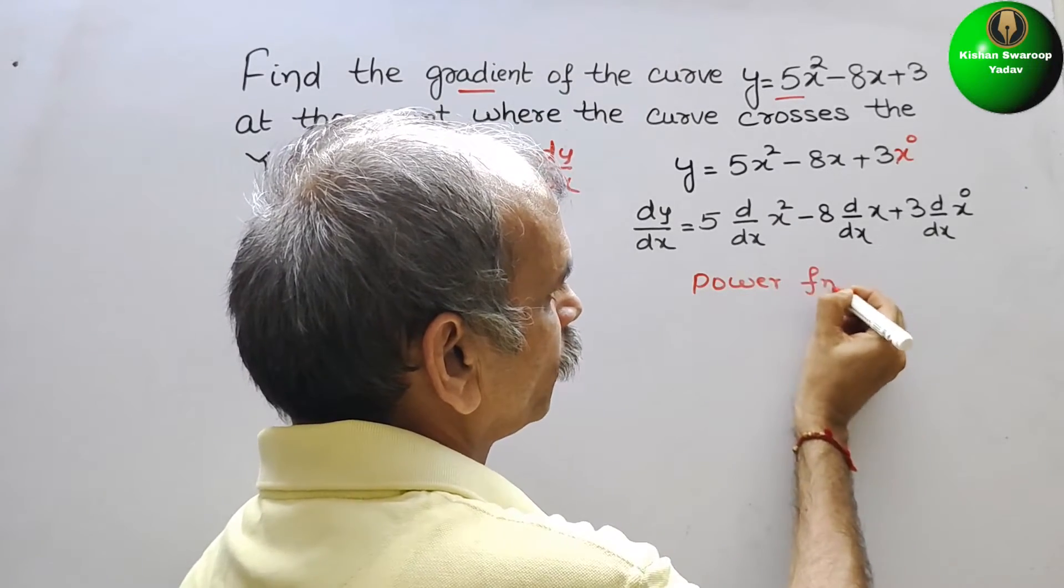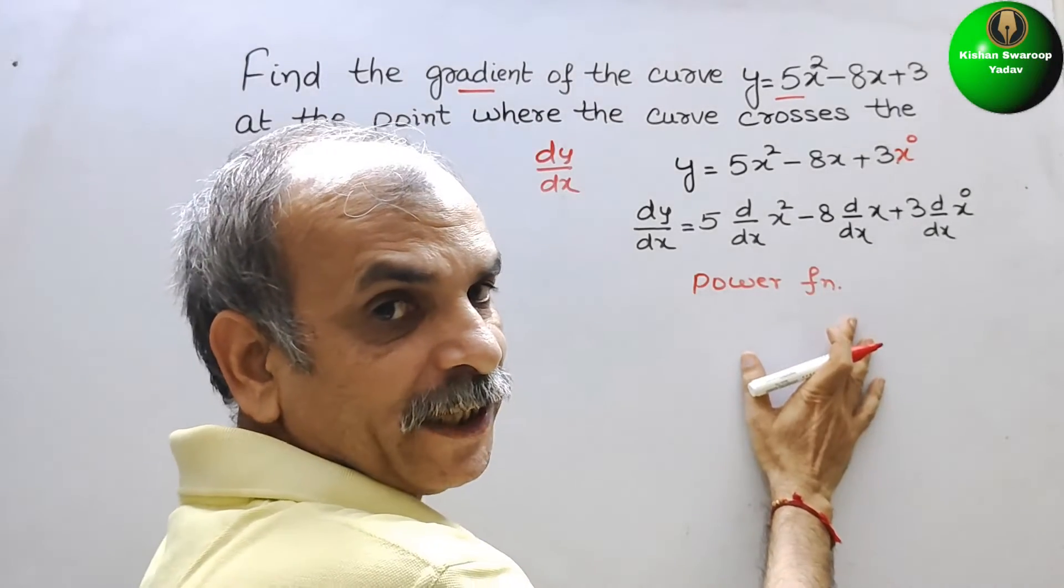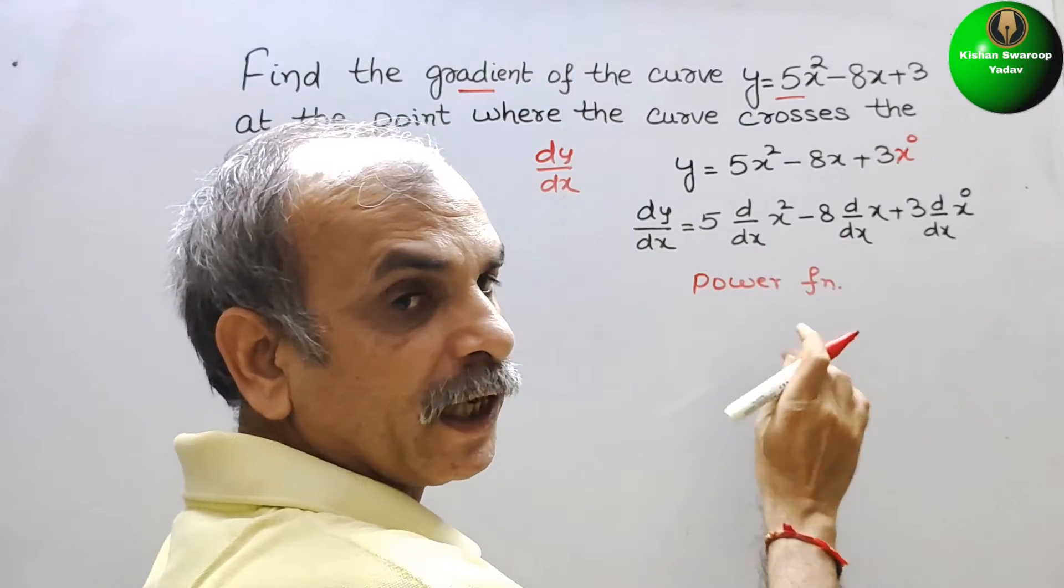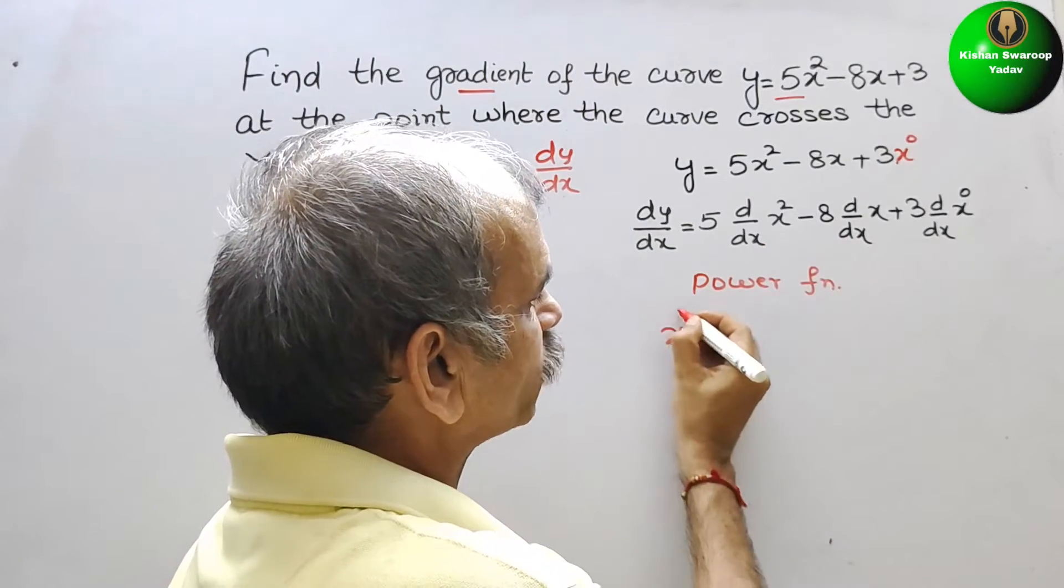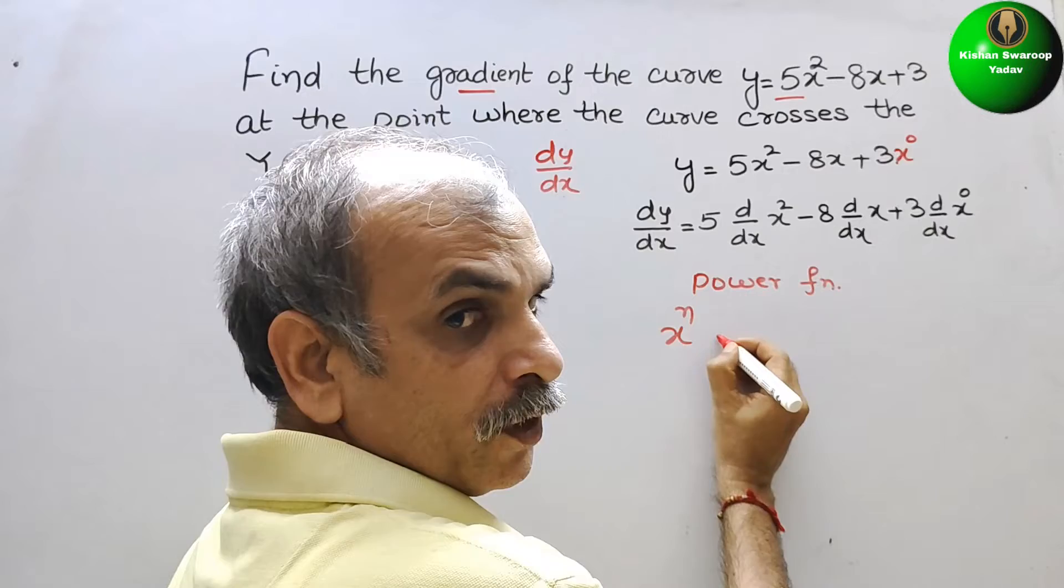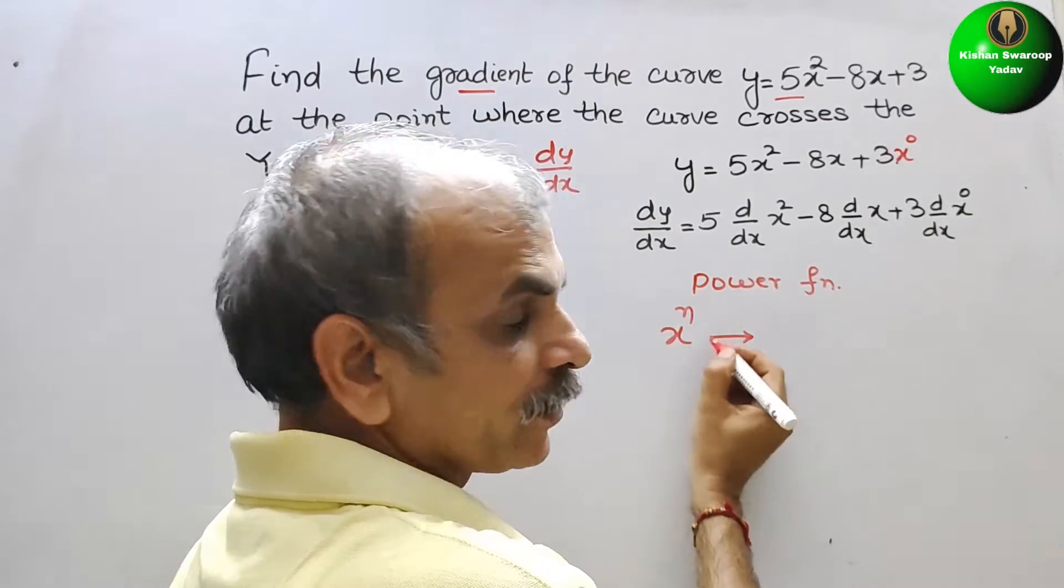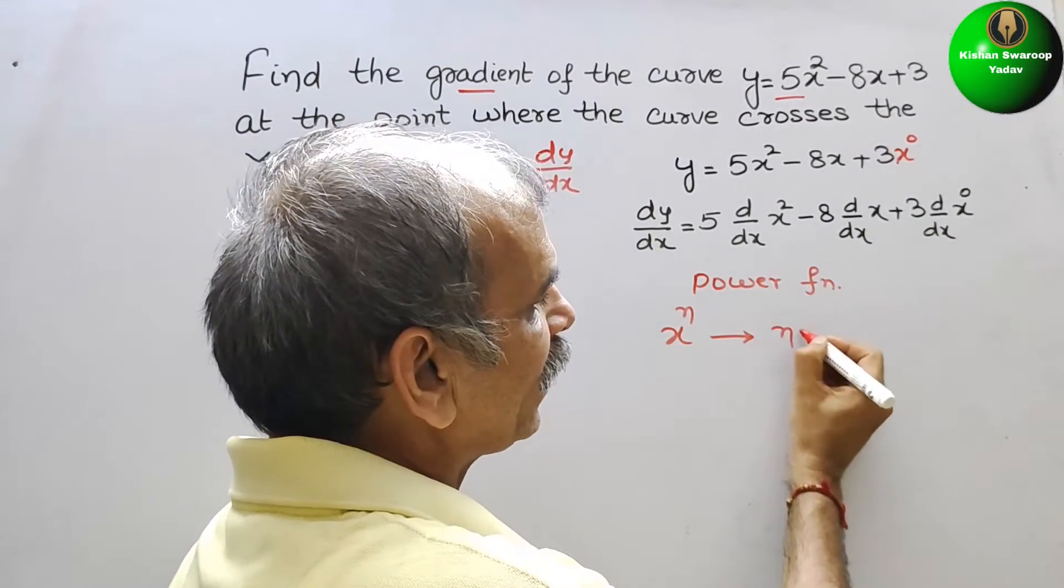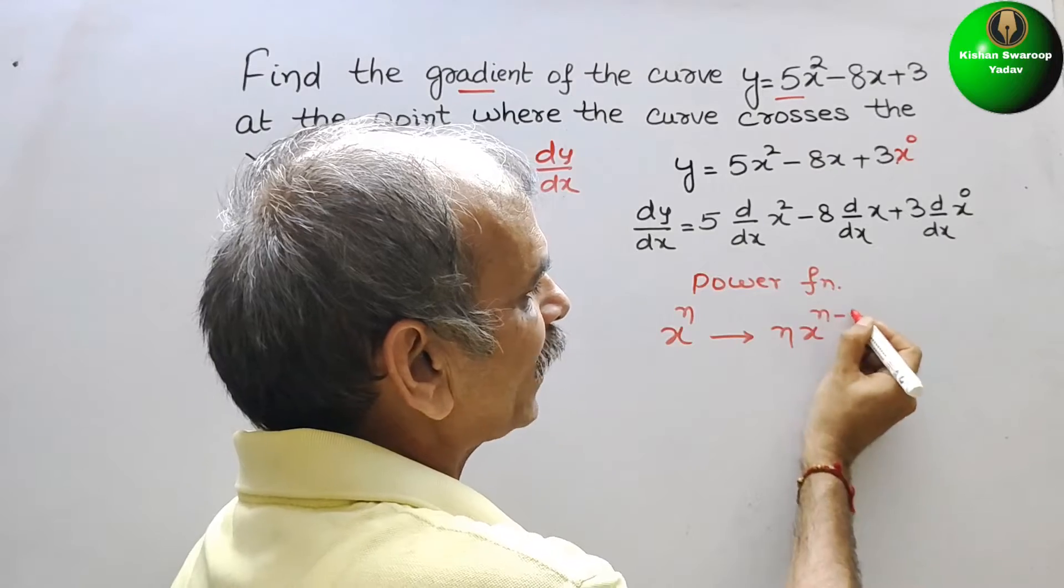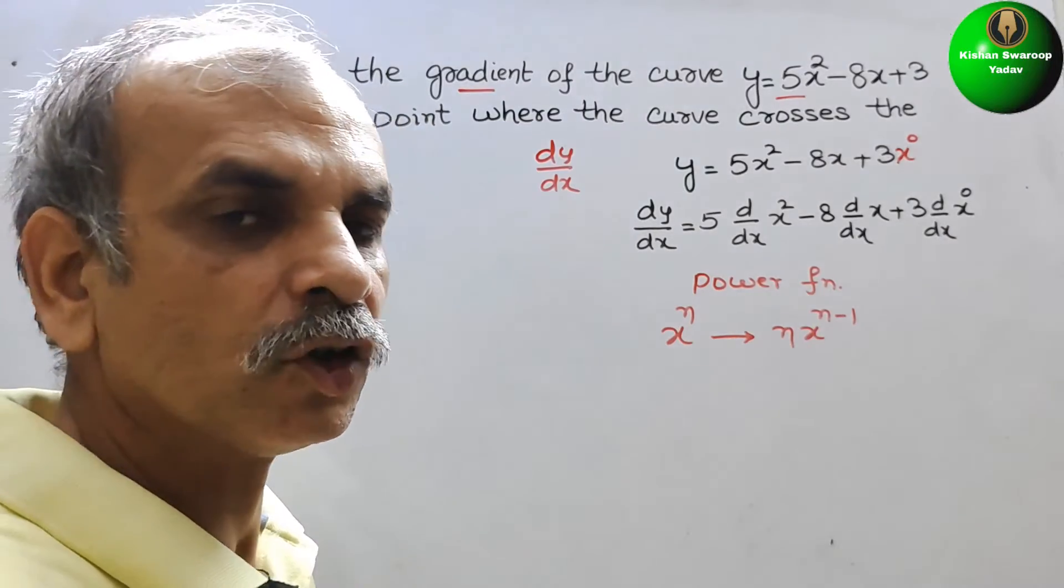Power function state that if your term is in this form x to the power of n, if you differentiate it, you will get n x to the power of n minus 1.